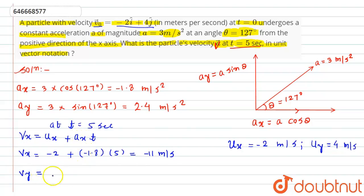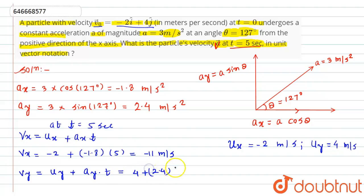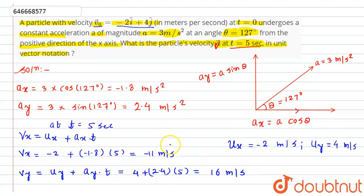Similarly, the y-component of velocity at t = 5 seconds is vᵧ = uᵧ + aᵧ·t = 4 + 2.4 × 5, which equals 16 meters per second.